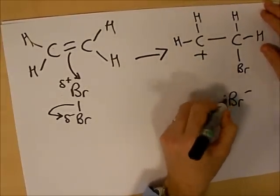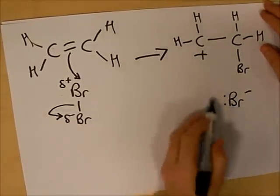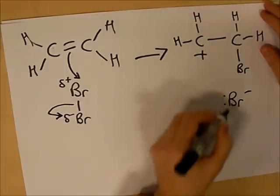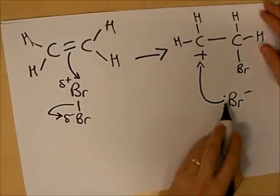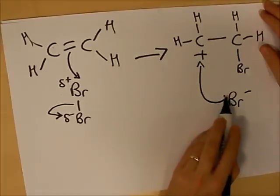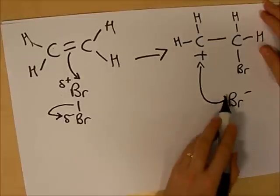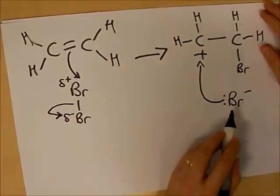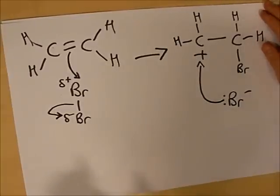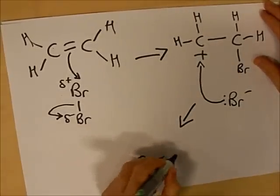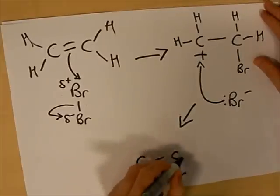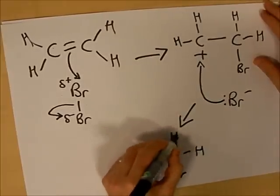This bromine, this one here, is now a lone pair and is available to attack the carbocation like so. The bond must start between the lone pair, the arrow must start between the lone pair, otherwise you will lose marks in an exam. You then show the formation of the final product, which is one to two dibromoethane.